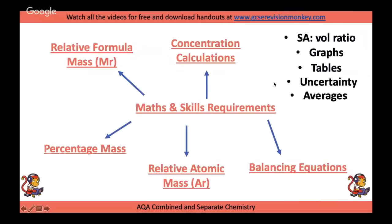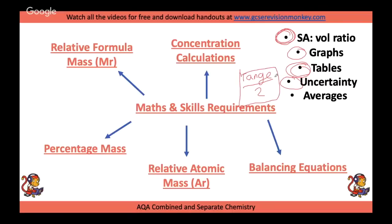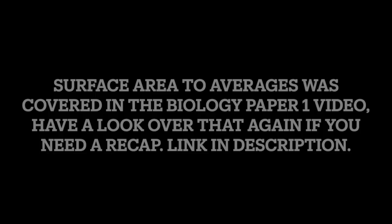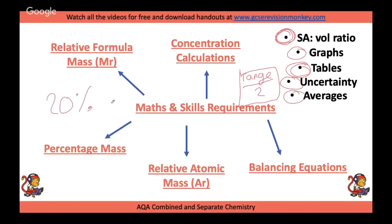Moving on to maths skills: surface area to volume ratio could come up in chemistry or physics. For graphs — drawing graphs, reading data from tables. Uncertainty is range divided by 2 — definitely an equation to remember. They could also ask you to calculate averages. In the chemistry exam, 20% is maths, including averages, uncertainty, graph skills, and quantitative chemistry such as relative formula mass and concentration calculations.